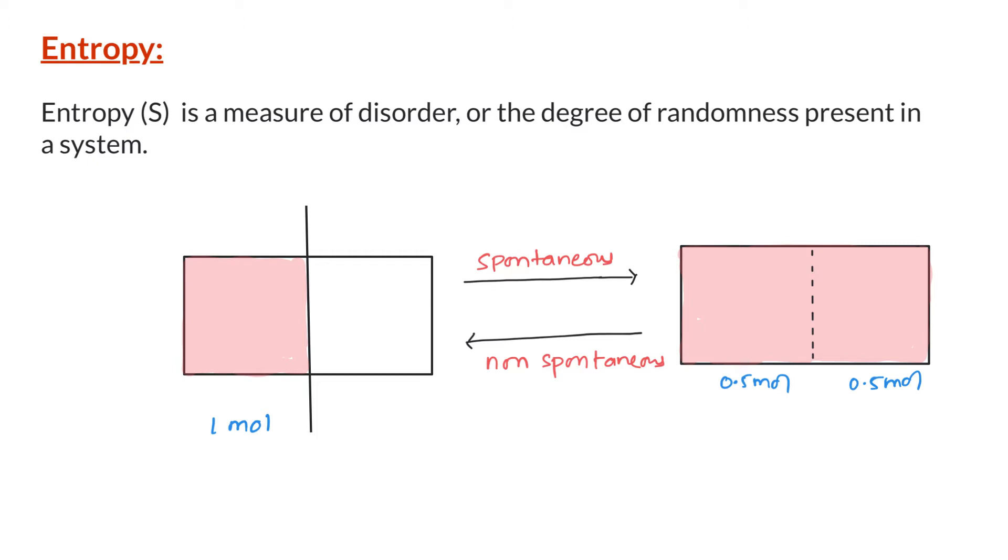Let us understand why this process is spontaneous by taking a statistical look at the concept of entropy. First, let us assume we have only one gas particle on the left hand side of the container and the right hand side is evacuated. When we remove the partition, the gas particle is free to move and it moves randomly across the entire container. If we take a snapshot of this gas particle at various time points, where could it be?